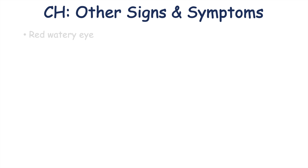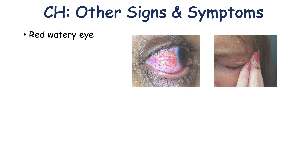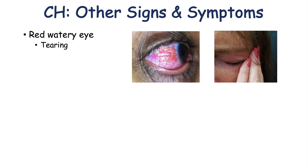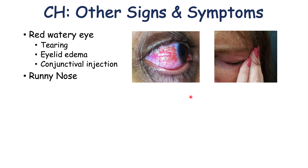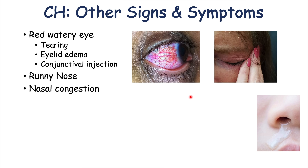More specific findings in cluster headaches include a red watery eye — tearing due to facial nerve involvement — eyelid edema, and conjunctival injection, all unilateral. The patient can also experience rhinorrhea or runny nose on the affected side, possibly due to trigeminal nerve involvement, along with nasal congestion. Forehead or facial sweating on the affected side can also occur.